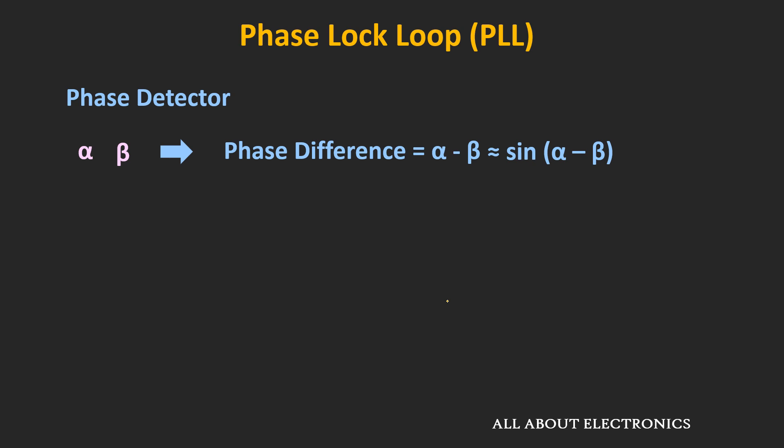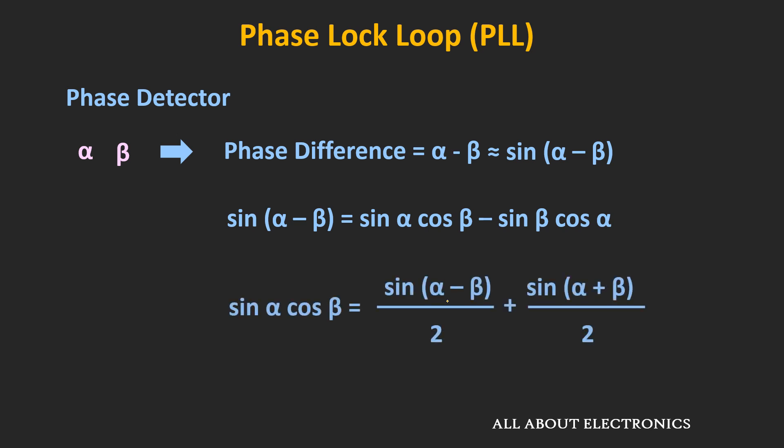This sin(α−β) can be written by the following expression. When we multiply the two signals, we get two terms: the first term is the difference between the two phases, while the second term is the summation of the two phases. The second term is a high-frequency signal and it can be eliminated using the low-pass filter. That means, just by multiplying the two signals, it is possible to generate the phase difference between them.